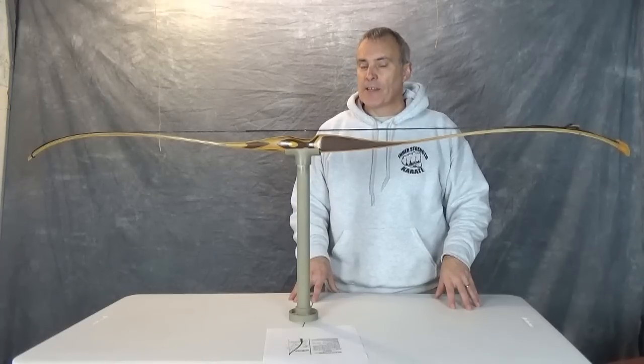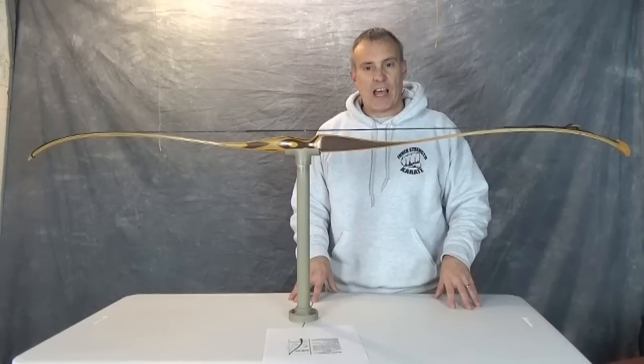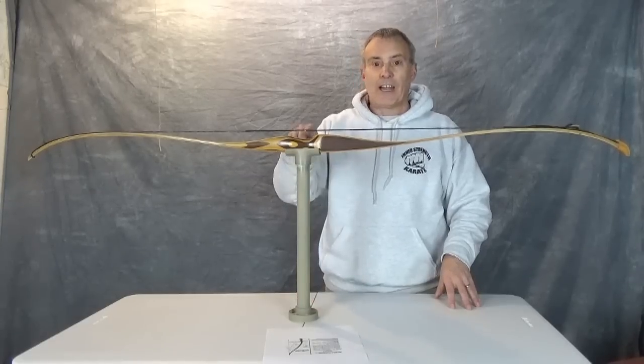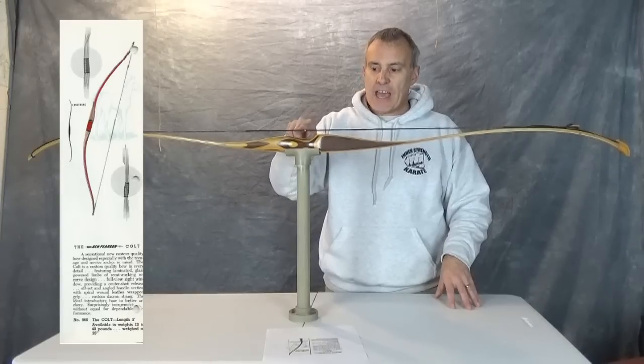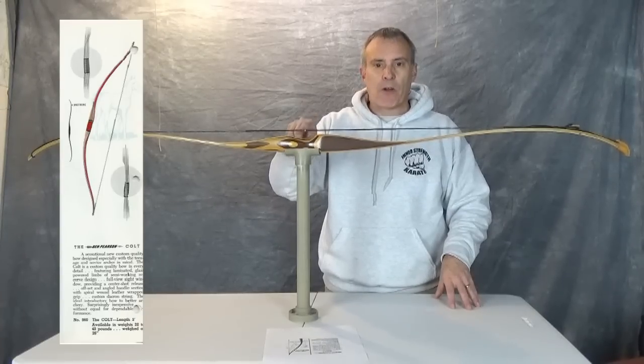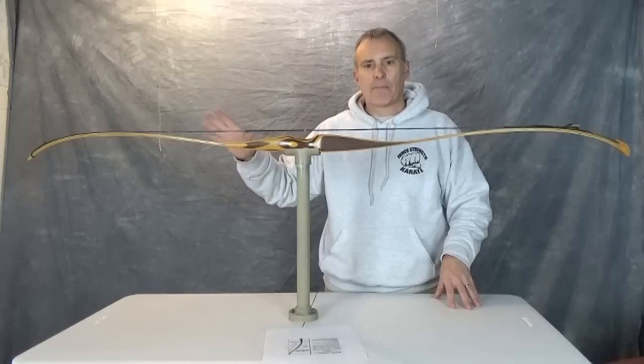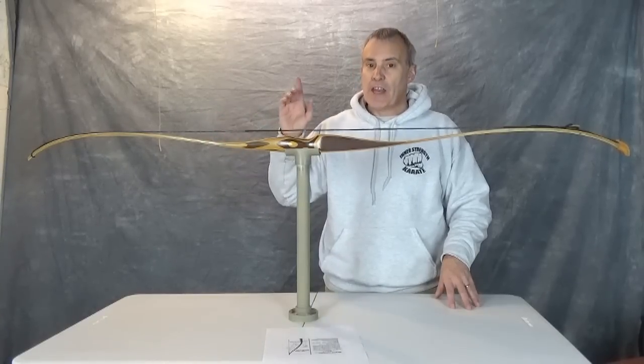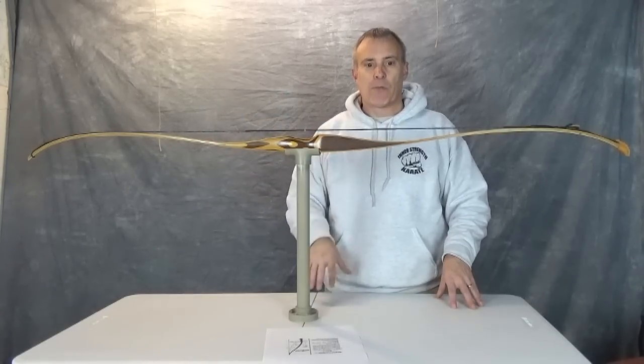The big thing that tells me that is the early models from 59 to 61 had a leather hand wrap and the leather grip. The grip area here is slightly different. Besides that the bow stayed pretty much the same. And then you throw in the logos and it's pretty much spot on.